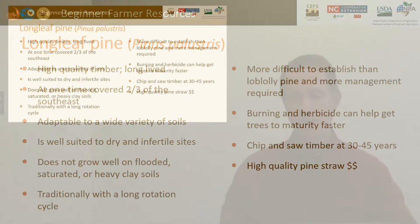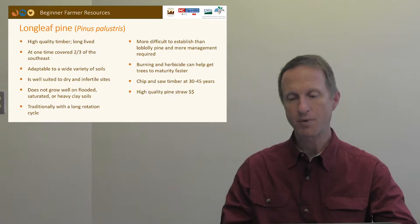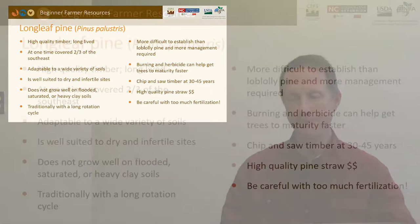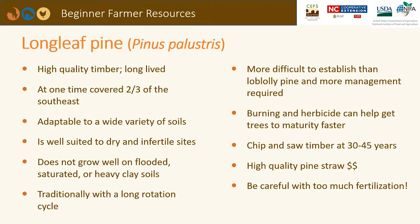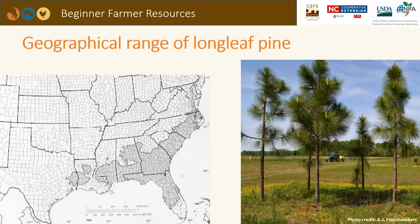Burning and herbicides can help get longleaf trees to maturity faster. There's an opportunity to cut for chip and saw timber at 30 to 45 years, though the species will grow for 100 years. There's also opportunity to add value by raking pine straw, though stand density should guide how much is harvested. The species doesn't respond dramatically to fertilization. Soils in the region, typically pH 5 to 5.5, are ideal. The longleaf is well adapted to the eastern half of North Carolina.